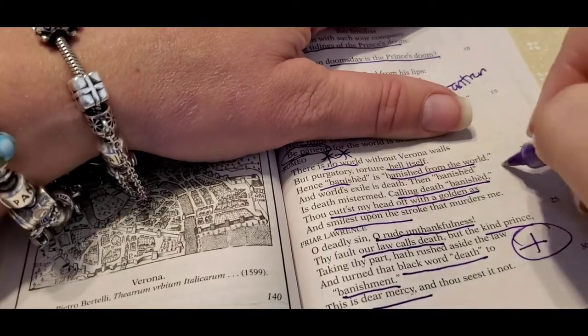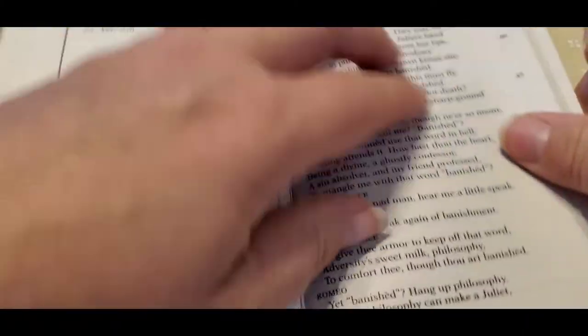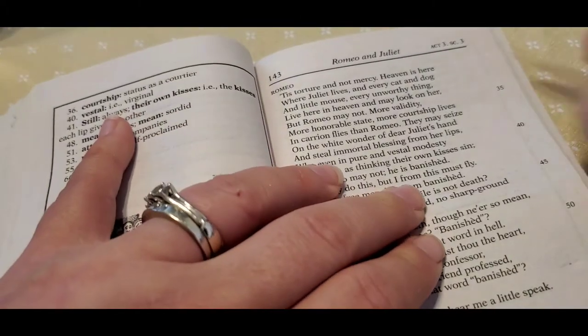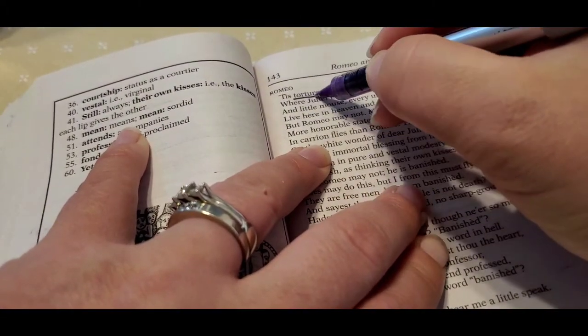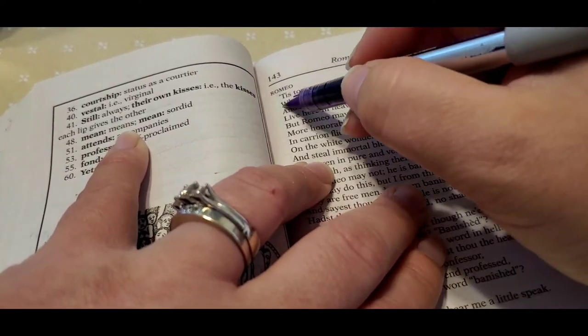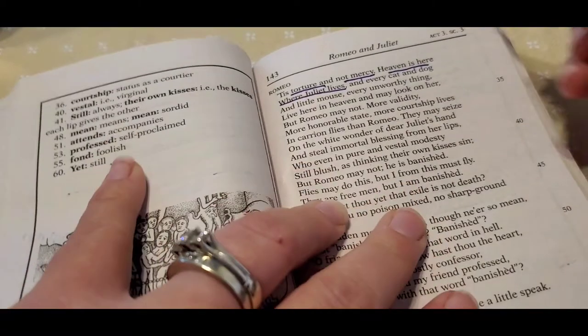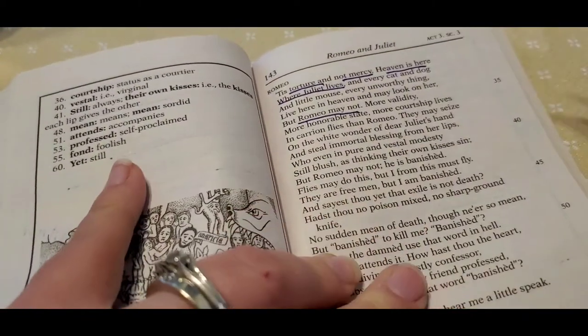And he's like, you ungrateful child, rude unthankfulness. Our law calls for death, but the Prince turned death to banishment. It's mercy. He's saying this is good. And remember that Romeo was like, no, right? And it's true, right? You'd rather be banished than dead. Not Romeo. He'd rather be dead.